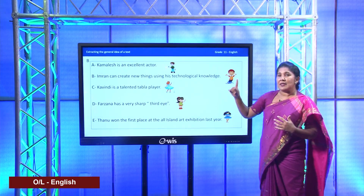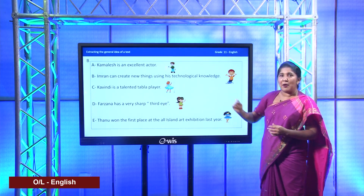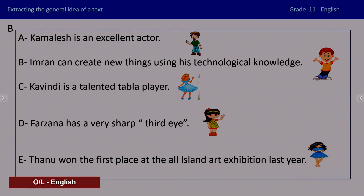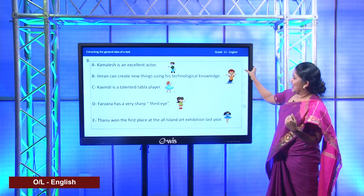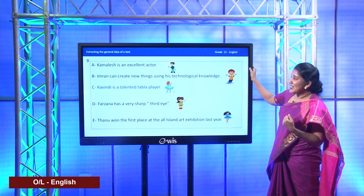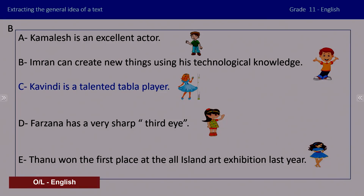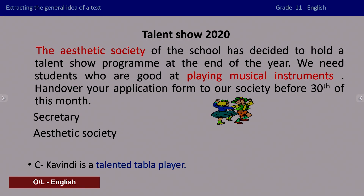So you see children, there are some special words - just like the previous text - which match with the topic, the notice, and the child's capability. That was a talent show, and here we speak about the girl Kavindi who is a talented tabla player. Let's see whether our answer is correct. There you see the words being highlighted and it's very good to see that both you and I have got the correct answer. It is the aesthetic society and playing a musical instrument - the playing of a musical instrument goes with tabla playing.